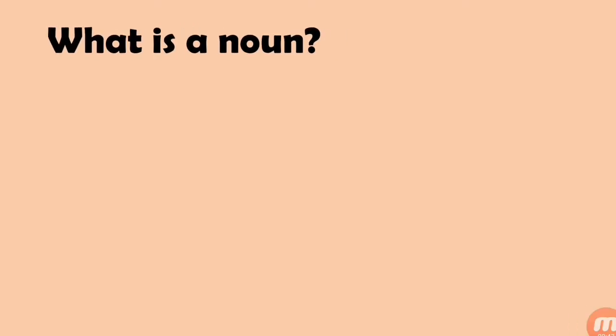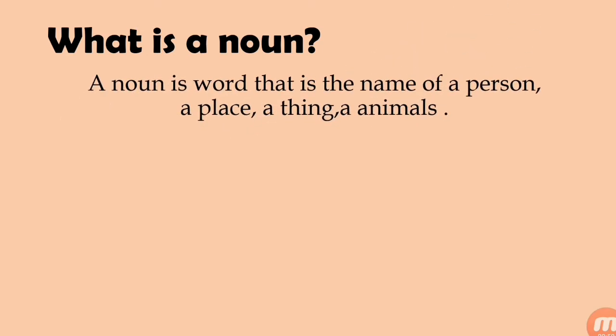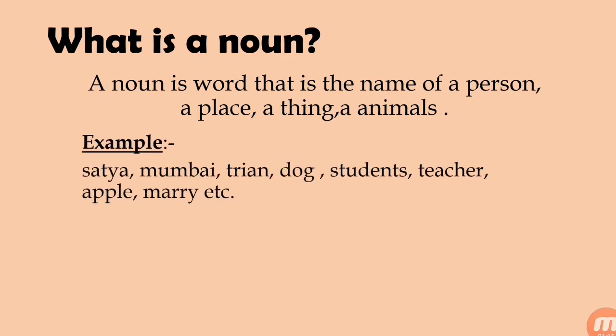What is a noun? A noun is a word that is the name of a person, a place, a thing, and we can say animals. Wherever in a sentence we are using a person, place, thing, or animal's name, it automatically shows that a noun is there in that sentence. For example: Satya, Mumbai, Train, Dog, Student, Teacher, Apple, Mary, etc. You can classify them easily by the names only.